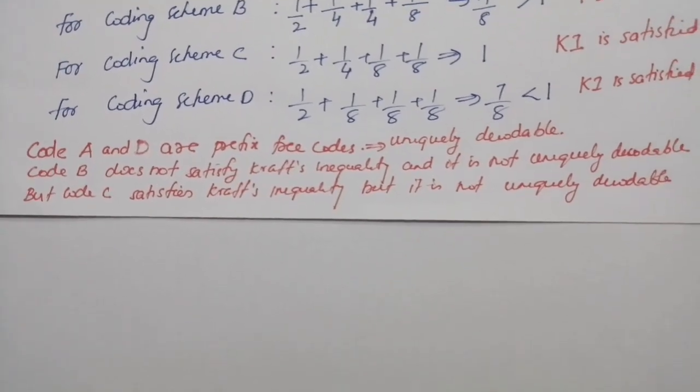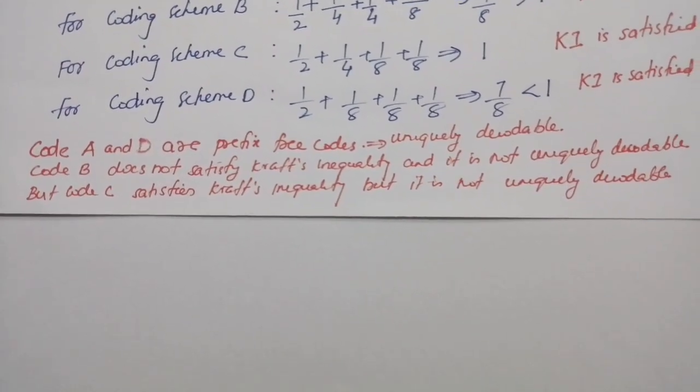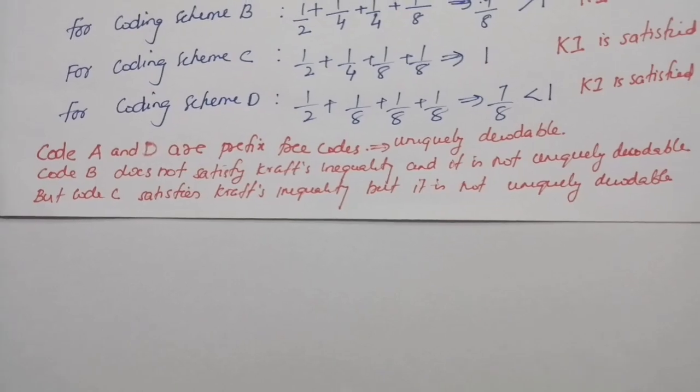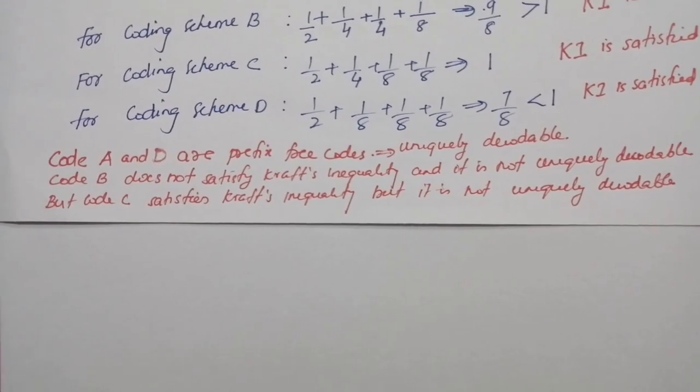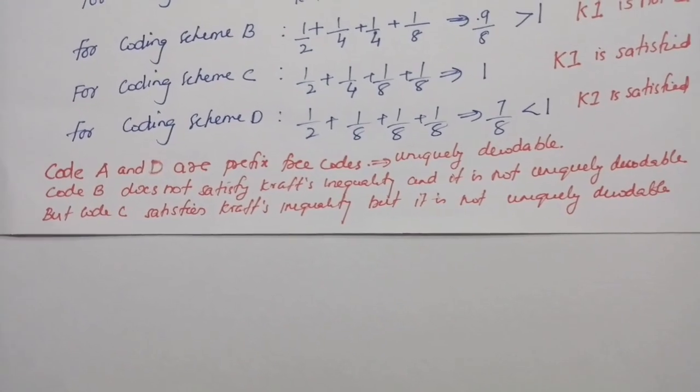So generally, we can say that a uniquely decodable code should satisfy Kraft's inequality. But code satisfying Kraft's inequality need not be uniquely decodable.